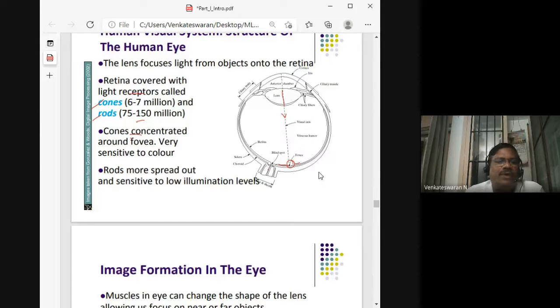These receptors are sensitive to low illumination. Cones are sensitive to color, while rods are sensitive to low illumination light.